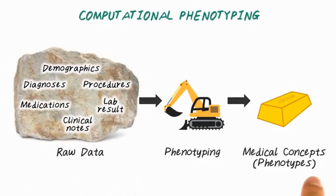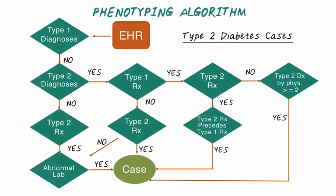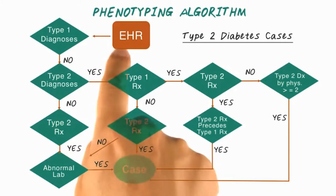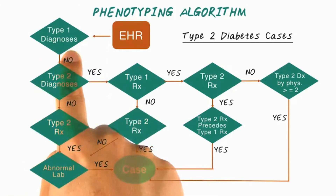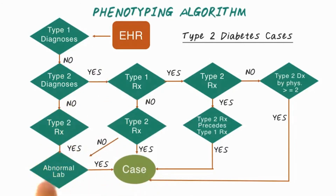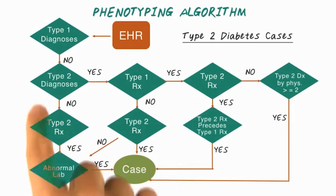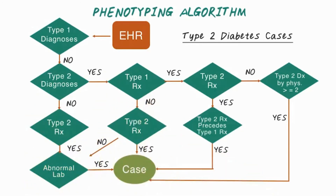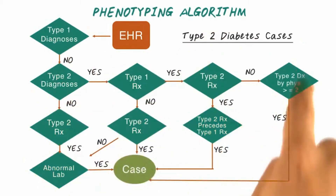Phenotyping is the process of deriving research-grade phenotypes from clinical data using computer algorithms. Here's a phenotyping algorithm for type 2 diabetes. The goal is to determine whether a patient has type 2 diabetes based on her electronic health records. For example, we first check whether the patient has a type 1 diabetes code in her record. If no, we check whether a type 2 diabetes diagnosis is present. If still no, we check medications for type 2 diabetes, then check abnormal lab results related to diabetes. If these two steps are confirmed, then we confirm she has type 2 diabetes. This decision flow is a phenotyping algorithm, developed manually by clinical experts.